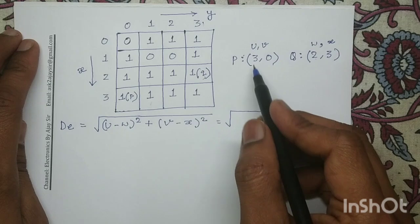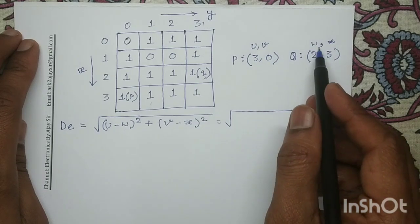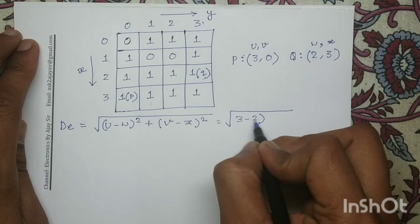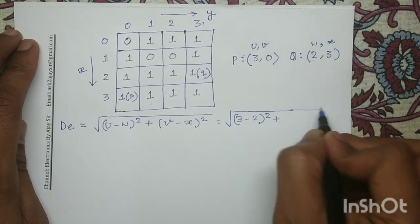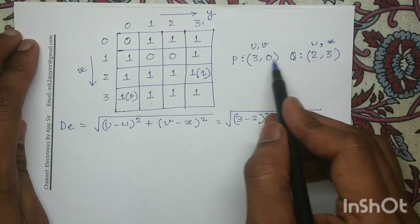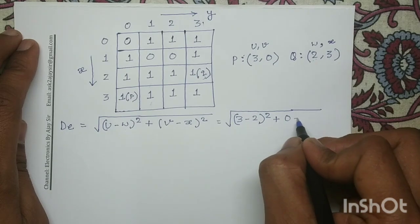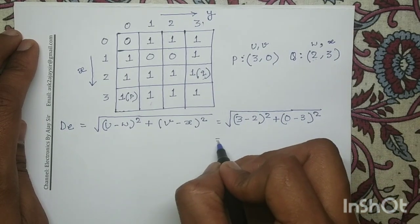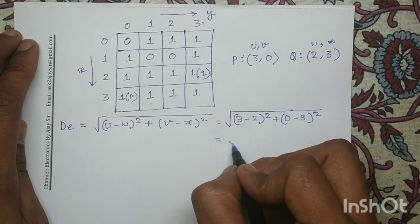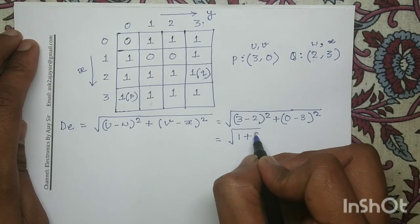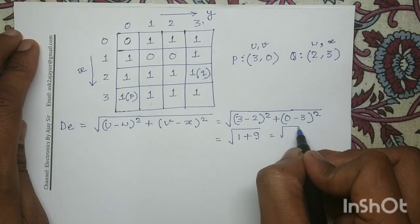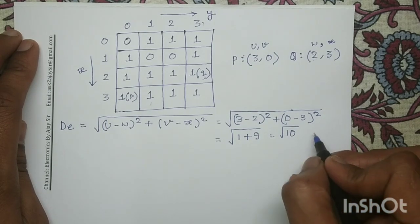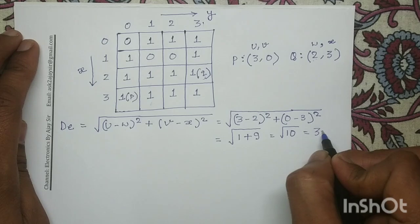So from this we can write: (U minus W) that is (3 minus 2) whole square plus (V minus X) that is (0 minus 3) whole square, which on simplification gives us square root of 1 plus 9, equal to square root of 10. Up to 2 decimal places it is 3.16.